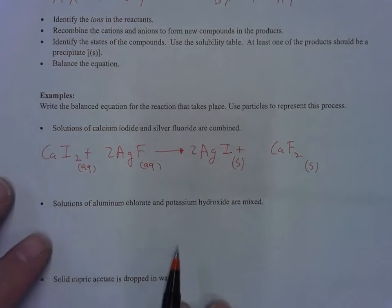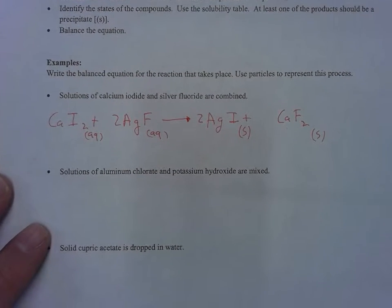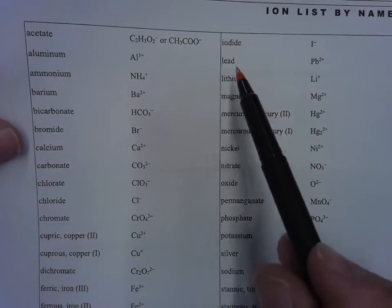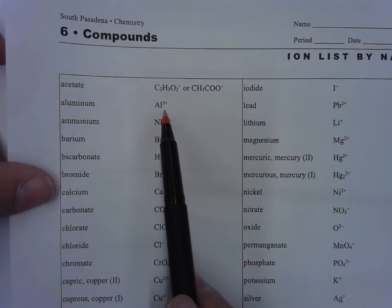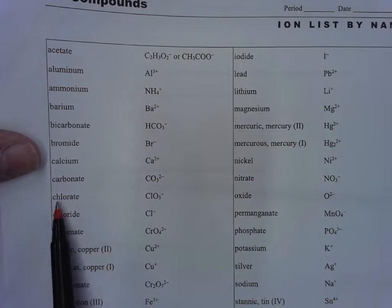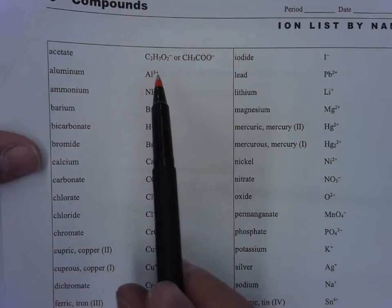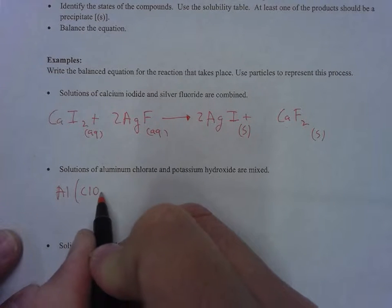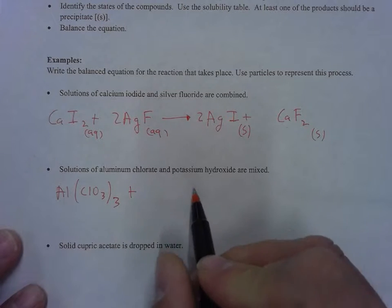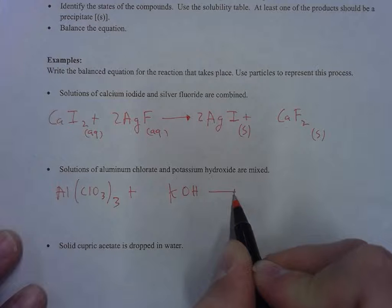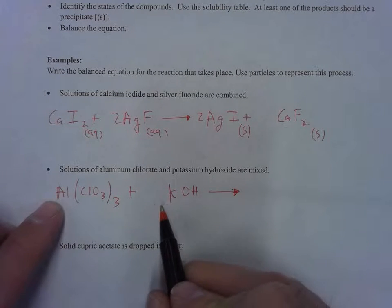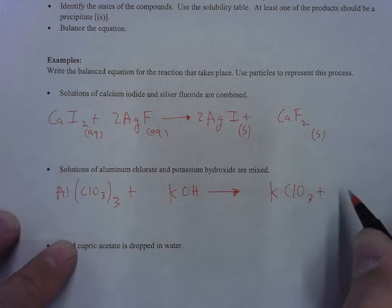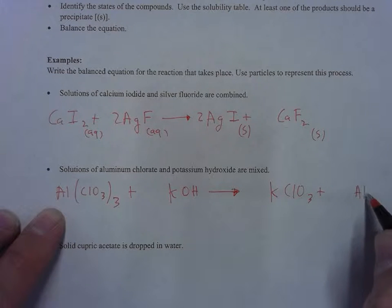Next: solutions of aluminum chlorate and potassium hydroxide are mixed. Aluminum forms a plus three, chlorate forms a minus one, so I need three chlorates to cancel out that plus three. So aluminum chlorate, Al(ClO3)3, plus potassium hydroxide KOH. Potassium and aluminum switch places, giving potassium chlorate KClO3 plus aluminum hydroxide Al(OH)3.